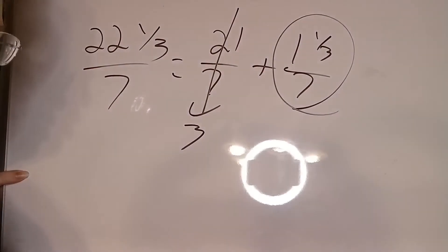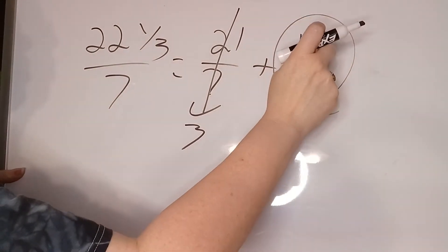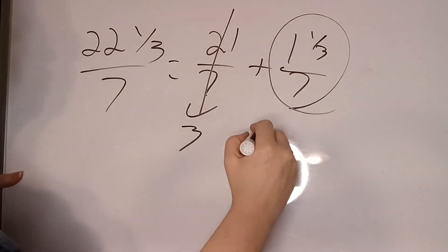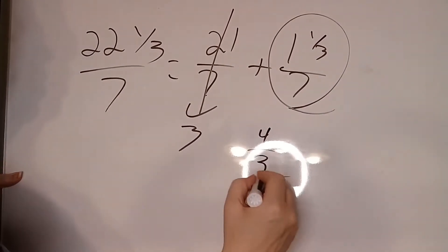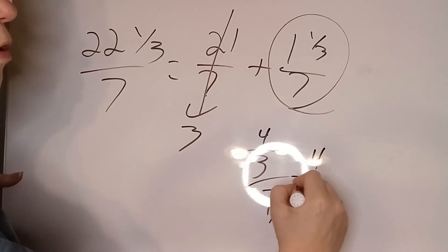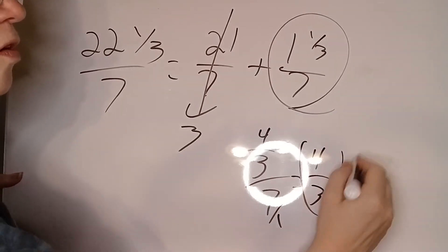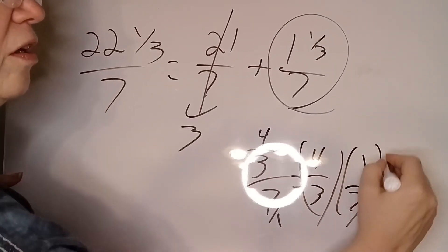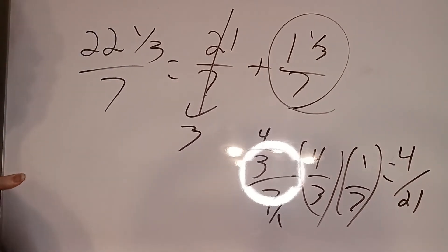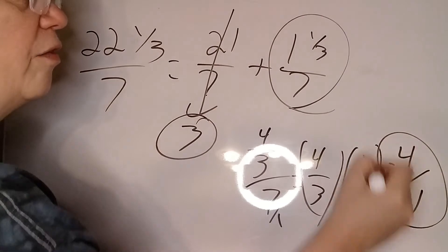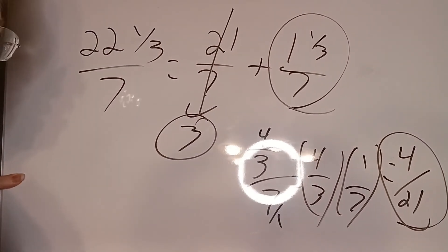All right, so this is what we change into an improper fraction. 3 times 1 is 3 plus 1 is 4. So we have 4 thirds divided by 7. That is 4 over 3, 1 over 7, which gives us 4 over 21. So our answer is 3 and 4 twenty-firsts, just like we just had.